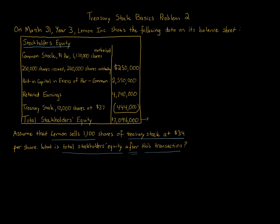All we have to do here is take the total stockholders equity of $7,096,000 and adjust it for this additional transaction. It's a pretty straightforward question — it really just comes down to understanding the language and how this transaction affects stockholders equity. You're given total stockholders equity before this transaction, and it's asking what is the total stockholders equity after this transaction.